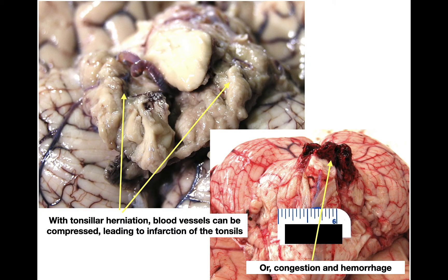Two additional findings can be seen with tonsillar herniation. In the top left, herniation of tonsillar tissue pinches off its blood supply and can cause necrosis — the tissue is falling apart. In the bottom right, impingement on a venous structure without full arterial blockage leads to congestion and hemorrhage. Both are associated with individuals who had cerebellar tonsillar herniation from edema.